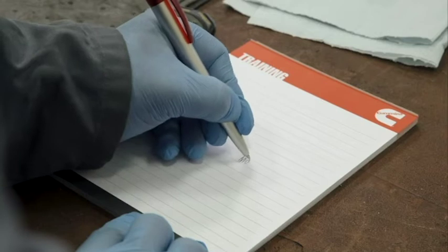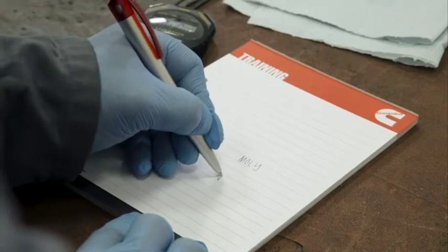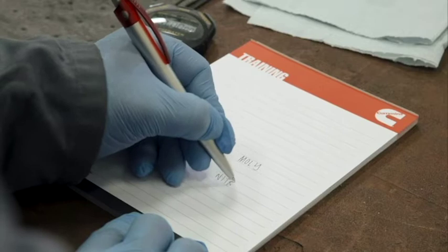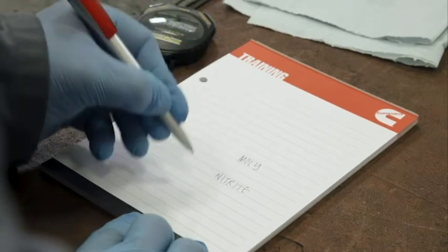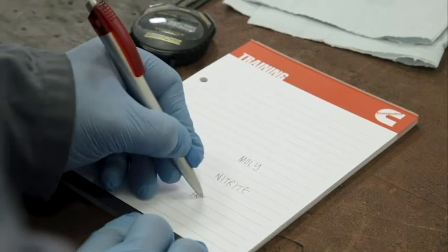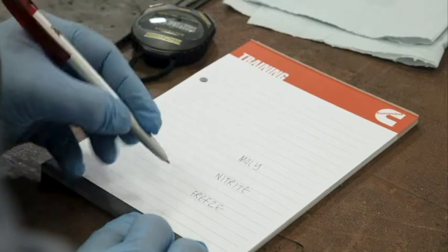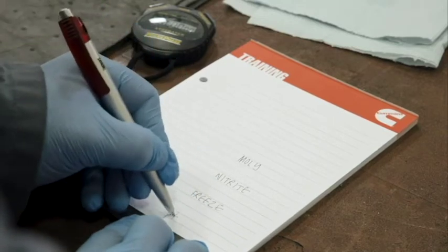As the test is time dependent, preparation is key to getting a good result. A good way of preparing is to write molybdate, nitrite and freeze point on a notebook next to where you're using the test strips so that you can note down the results. You can also do the same for pH.